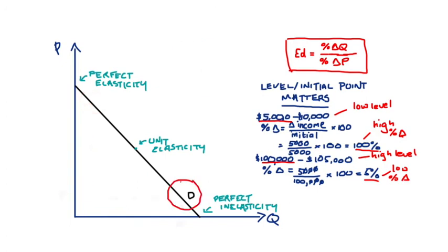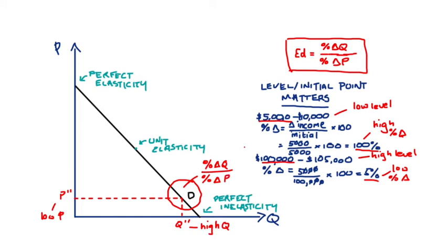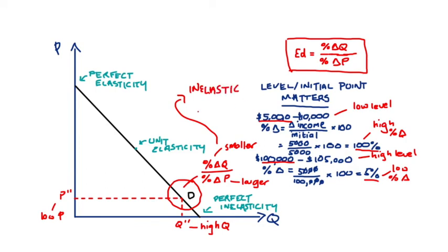At the other end of the curve, consider a position like p double-prime and q double-prime. Q double-prime is quite high and p double-prime is quite low. Applying the same logic: because quantities are relatively high, our percentage quantity changes in this region are going to be quite small. And because prices are relatively low, our percentage price changes are going to be quite large. This is exactly the condition we need for points to be inelastic — quantity changes are proportionately less than price changes.